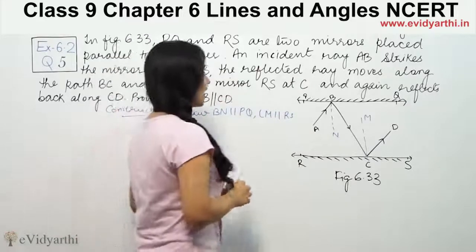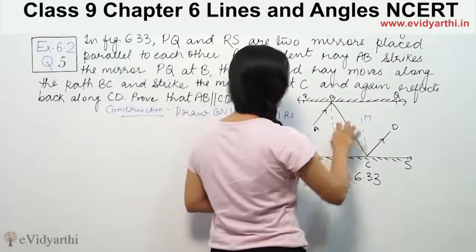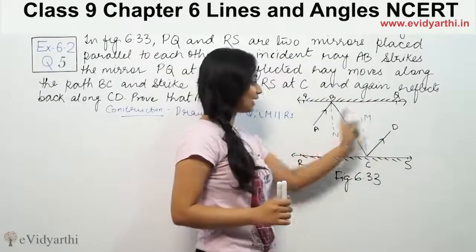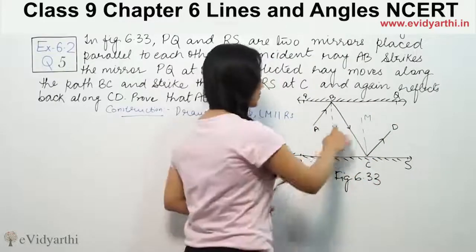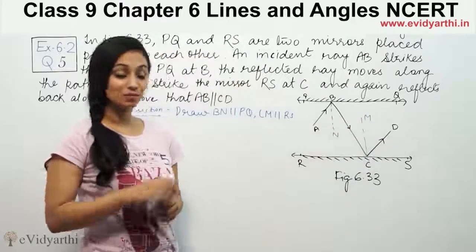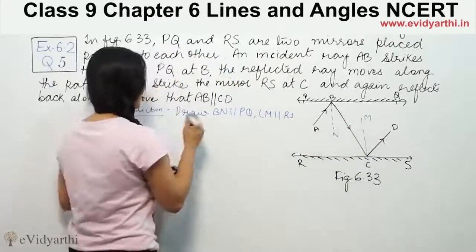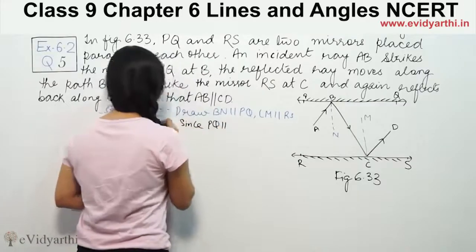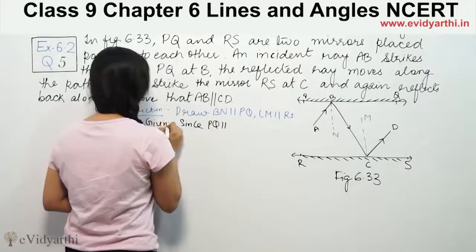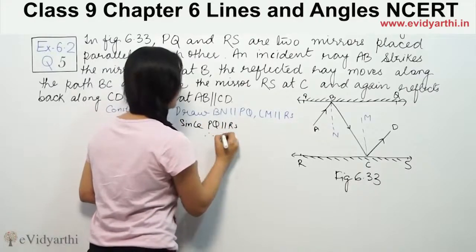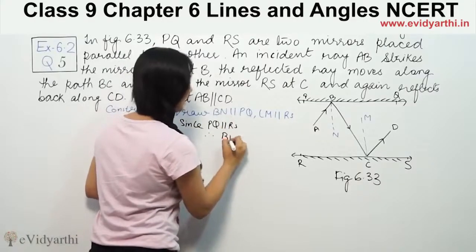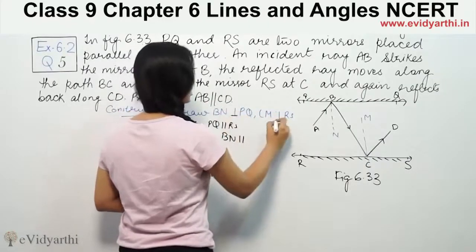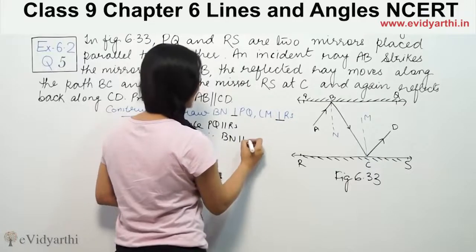Now, since PQ is parallel to RL, and BN is perpendicular to PQ and CM is perpendicular to RL, therefore BN is parallel to CM.